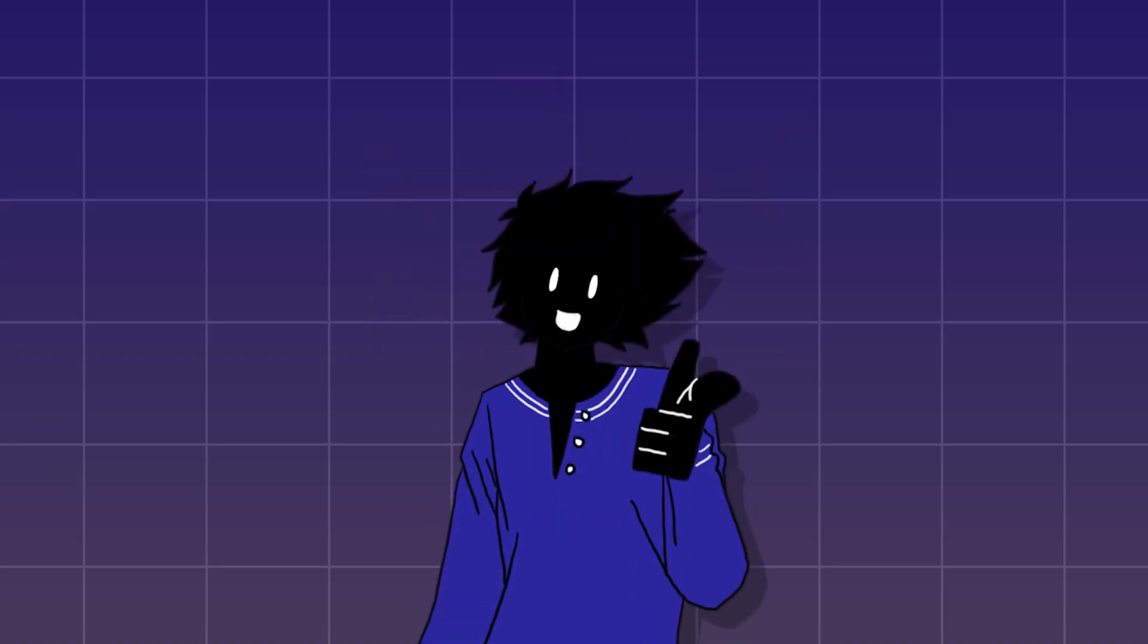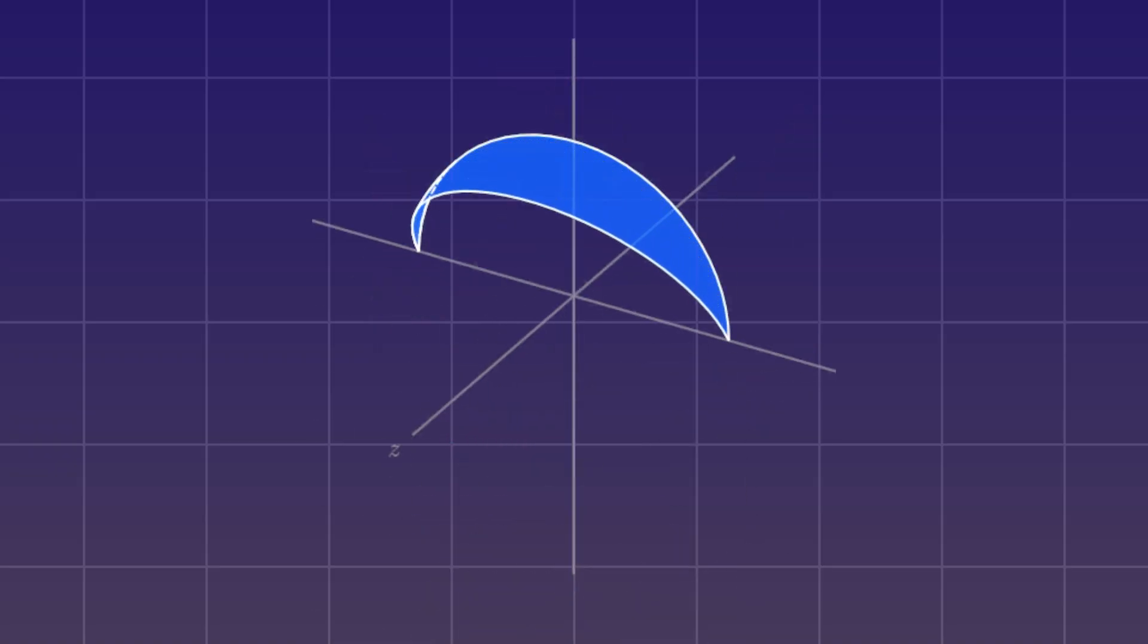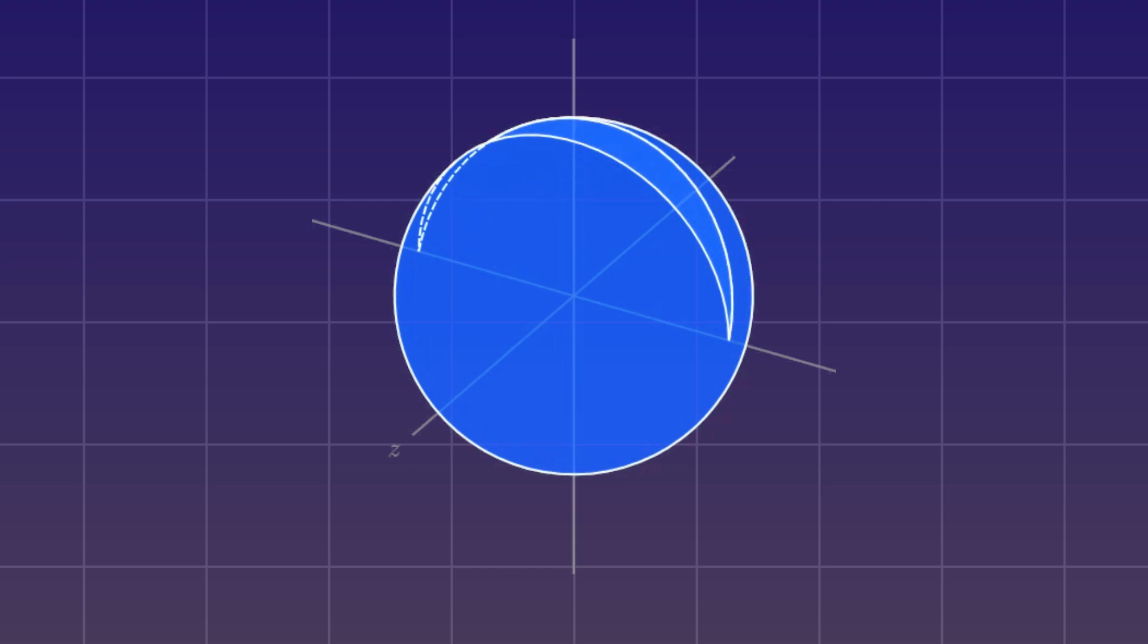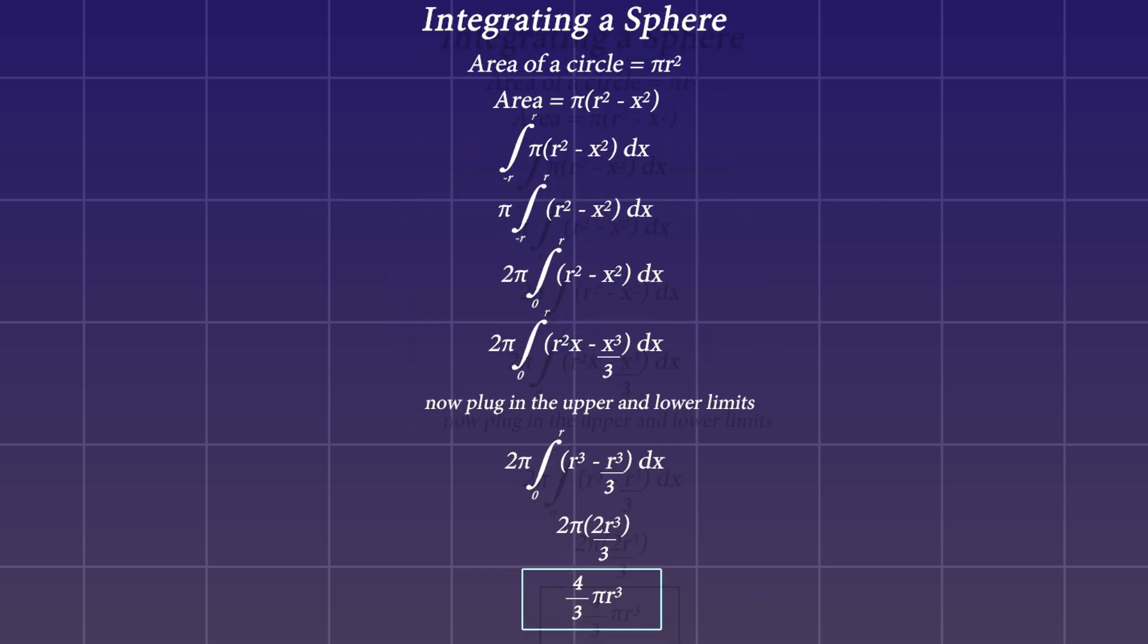By the way, if you were to do this with any 3D object, like a sphere, and use this disk method to integrate through it, if you work through the math, taking the formula for the area of the circle, plugging in the radius of the sphere, and find the antiderivative of that, and then plugging the numbers in, your answer will be the exact formula for the volume of a sphere.